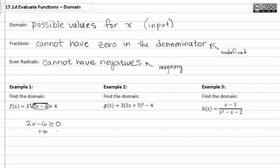Adding six to both sides to solve the inequality, we get 2x is greater than or equal to six. Dividing by two on both sides, we get x must be greater than or equal to three.